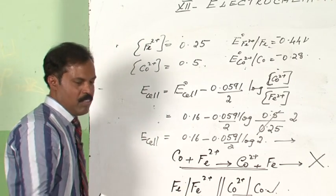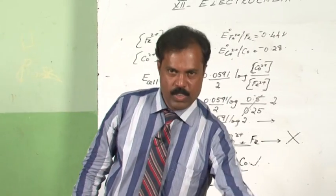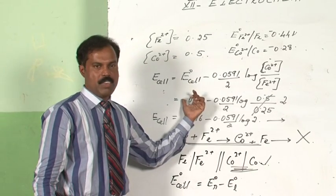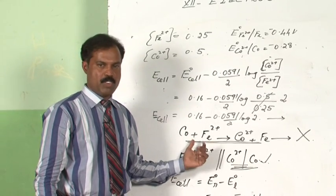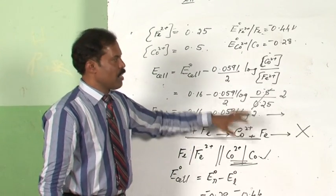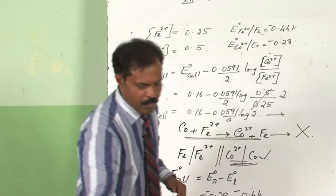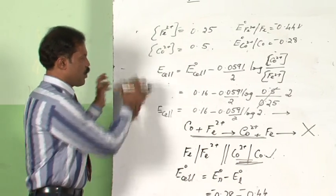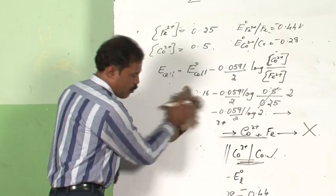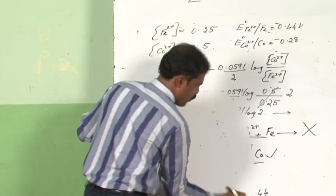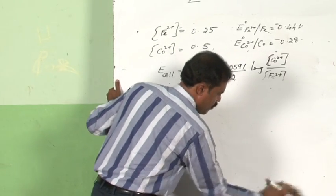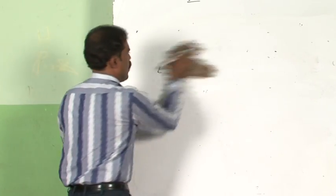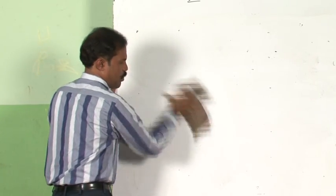With this we have completed the discussion of the electrochemical cell under standard as well as non-standard conditions. But there is a connection between the Nernst equation and the equilibrium constant of a reaction. Let us discuss how the equilibrium constant is related to the Nernst equation.